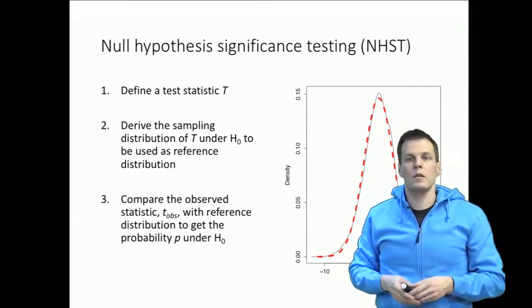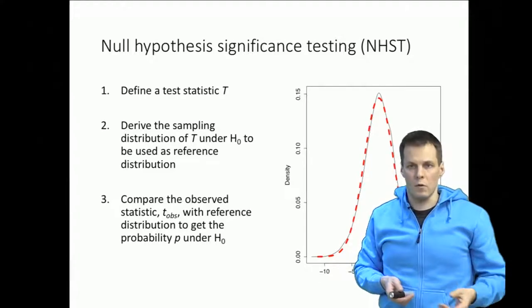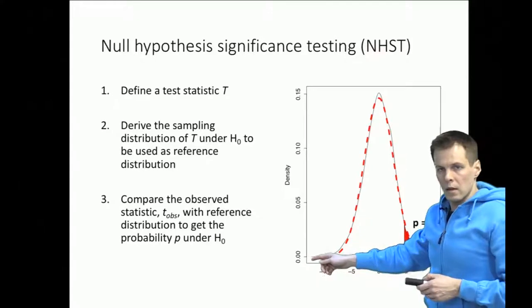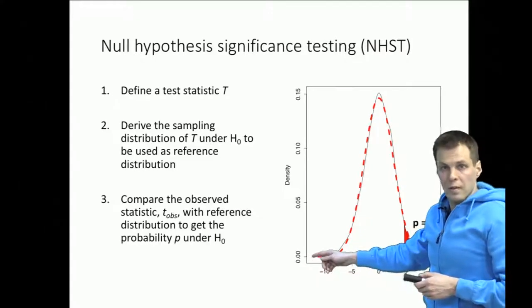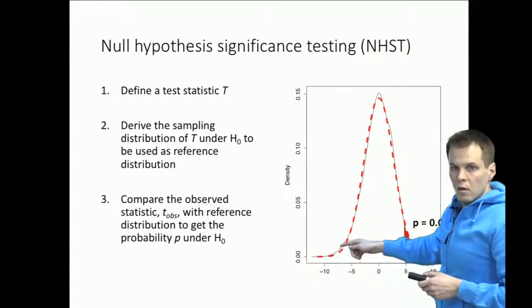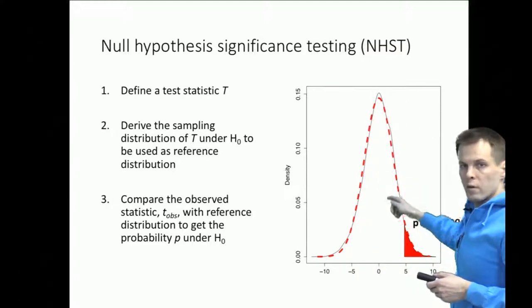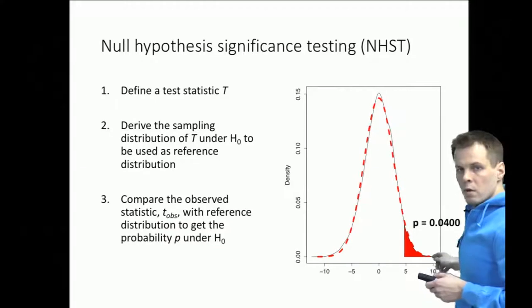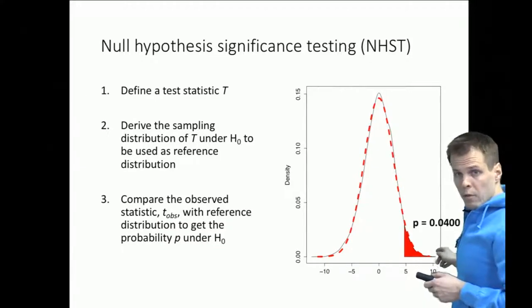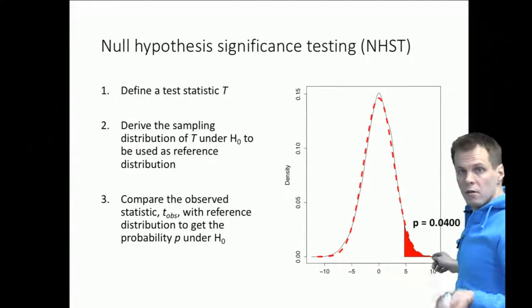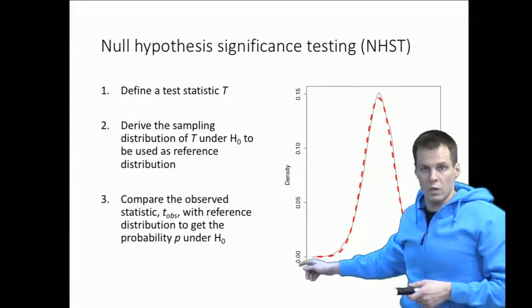So when we actually did repeated samples of this population we found out that taking 22 companies and comparing against the 478 remaining companies the mean difference between these two companies follows a normal distribution. So sometimes we get mean ROA for the smaller sample that is more than 10 points larger than the larger sample and sometimes the opposite result.